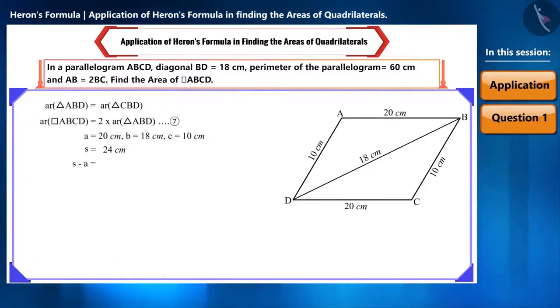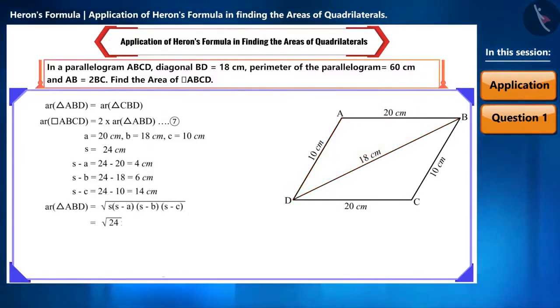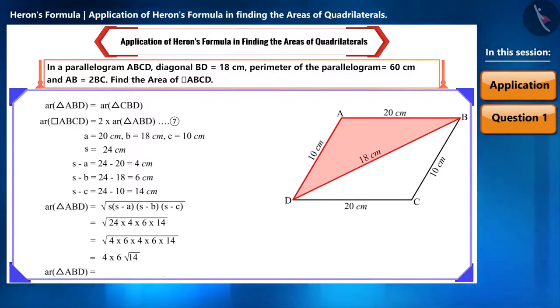Now, we will find the value of S minus A, S minus B, and S minus C. We can write the area of triangle ABD in this way and substitute it in the formula. Here, instead of finding the product of these numbers, we will find their factors. In this way, the area of triangle ABD will be 24 root 14 cm squared.